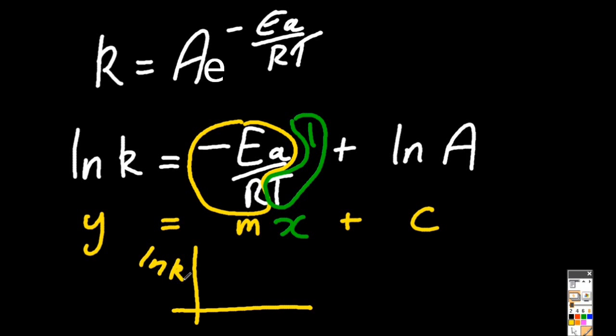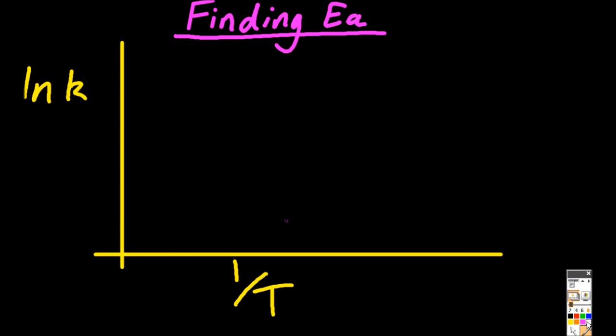So if I do ln k against 1 over T, that will give me a graph. Normally the points will go in this kind of orientation. Once I put them there, I'm going to try and draw a line of best fit.